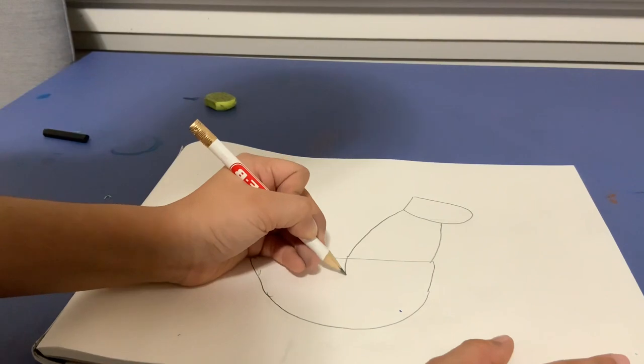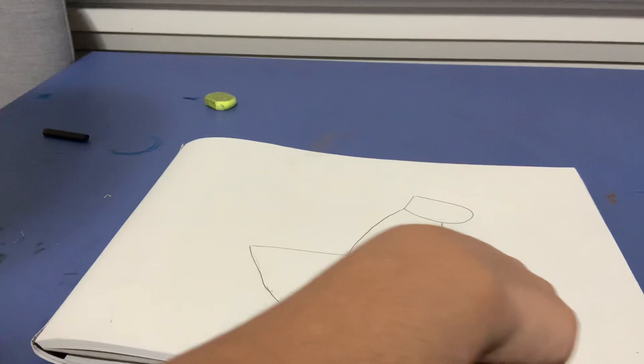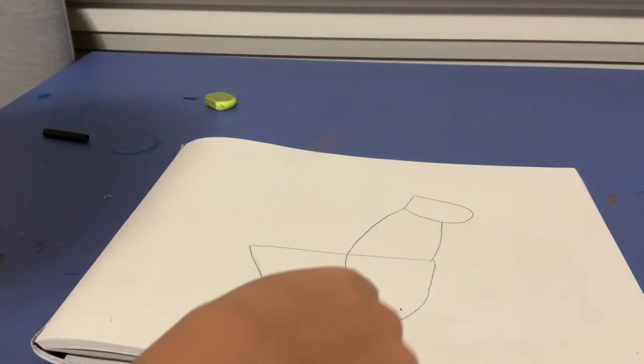Then you're going to extend the line onto the horse's body and make a curve line just like this. You'll end up with this shape.